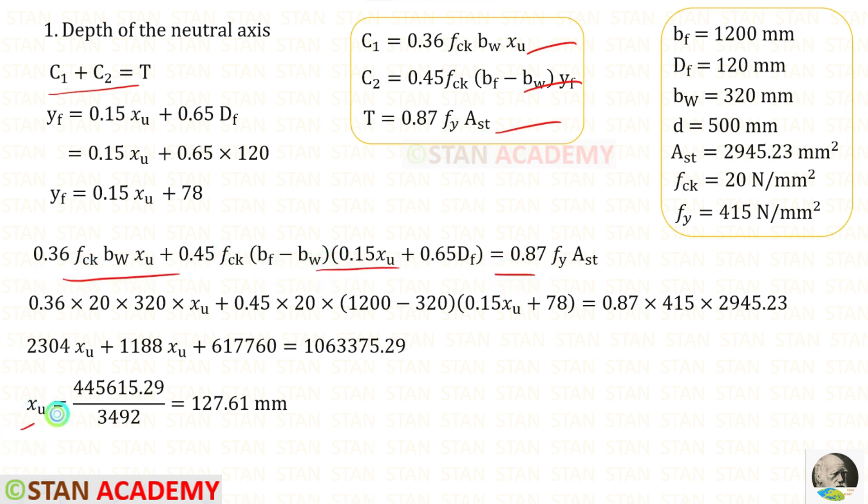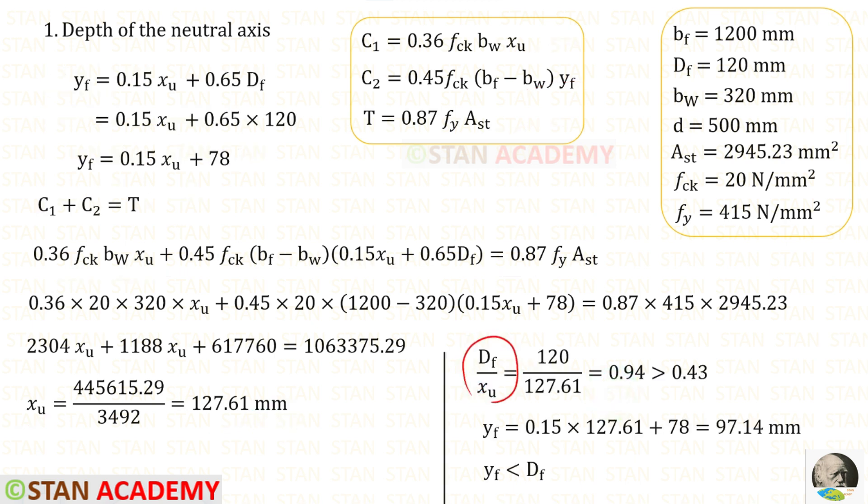In this we can apply all of them, so that for XU we will get 127.61 millimeter. For DF upon XU we will get 0.94, so it is greater than 0.43. In this one we can apply the value of XU so that we will get YF which is less than DF.